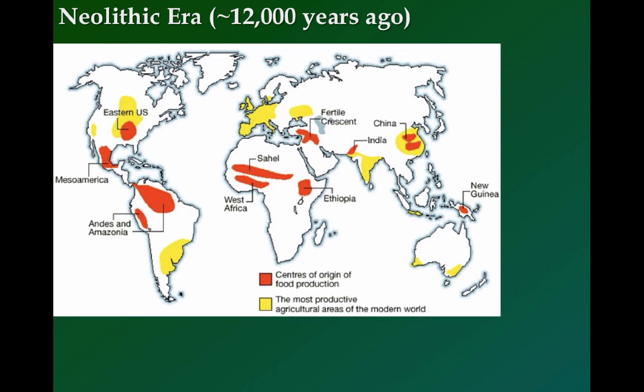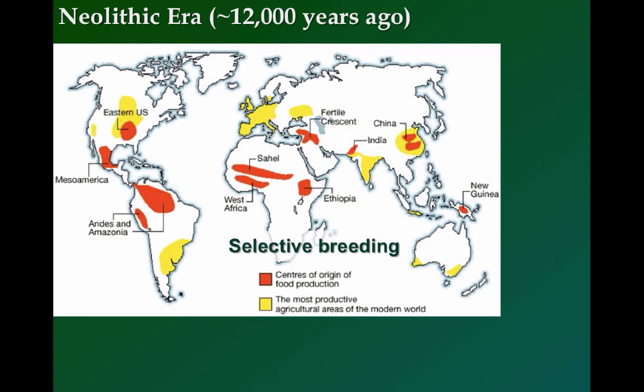Agriculture and consequently human civilization emerged primarily along river valleys. People would choose crops based on traits like taste or nutrition, so what was actually happening was that natural selection was being trumped by artificial or human selection. This is known as selective breeding, which we also refer to as plant or animal domestication.